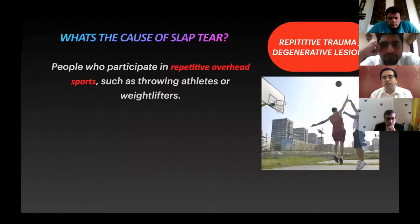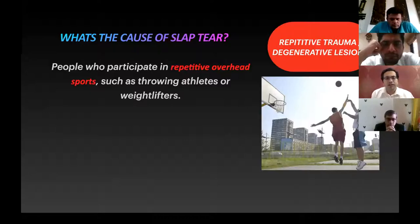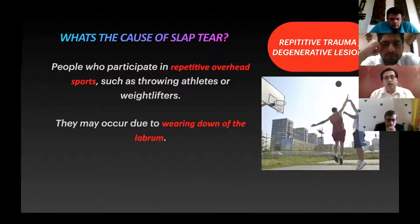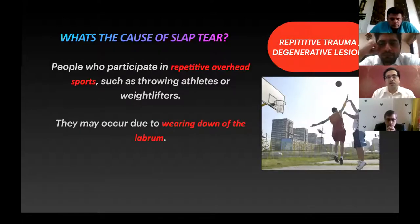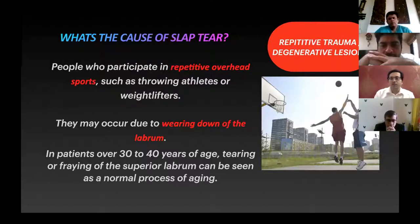Repetitive causes of SLAP tear are mainly overhead sports such as throwing athletes or weightlifters — baseball pitching, cricket long-distance throwing, badminton, and tennis. It is also commonly seen in weightlifters. There is a degenerative variant of SLAP which happens between 30 to 40 years of age, usually a grade one tear showing fraying of the superior labrum, which is a normal process or variant of aging.